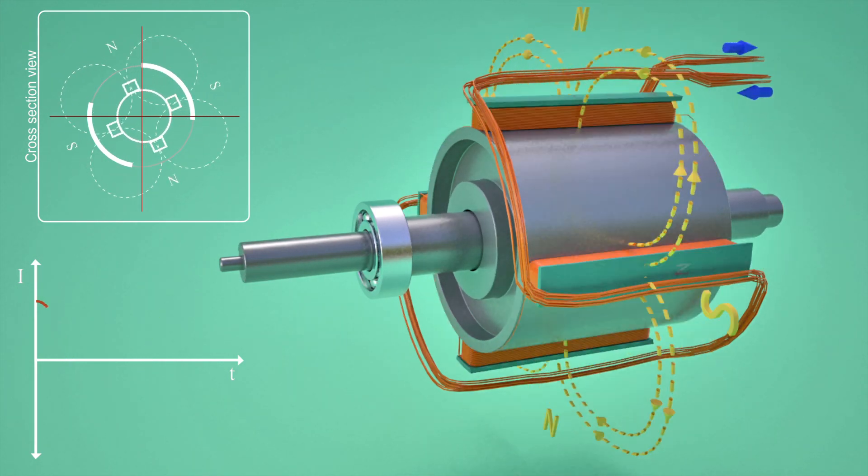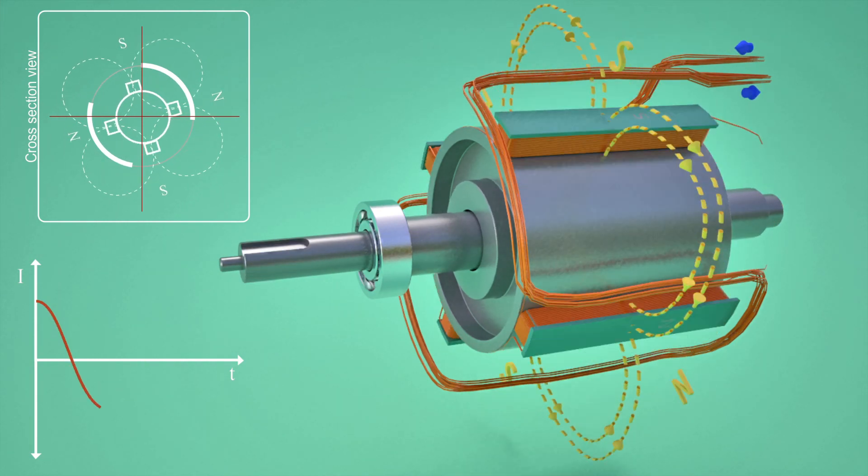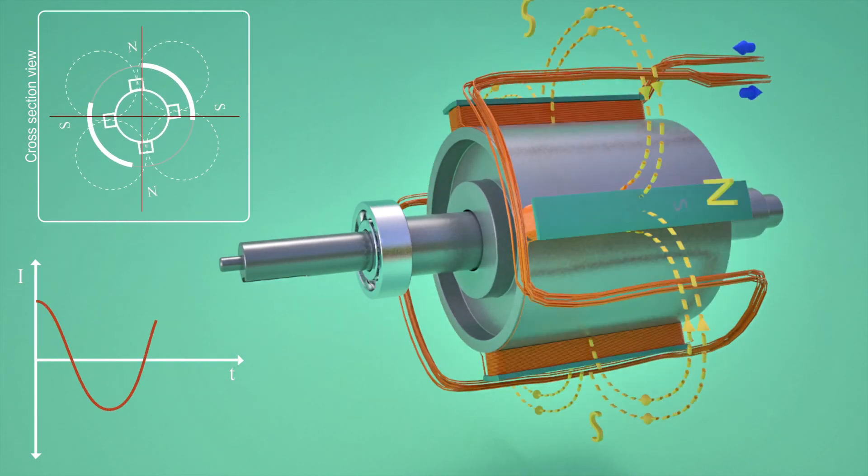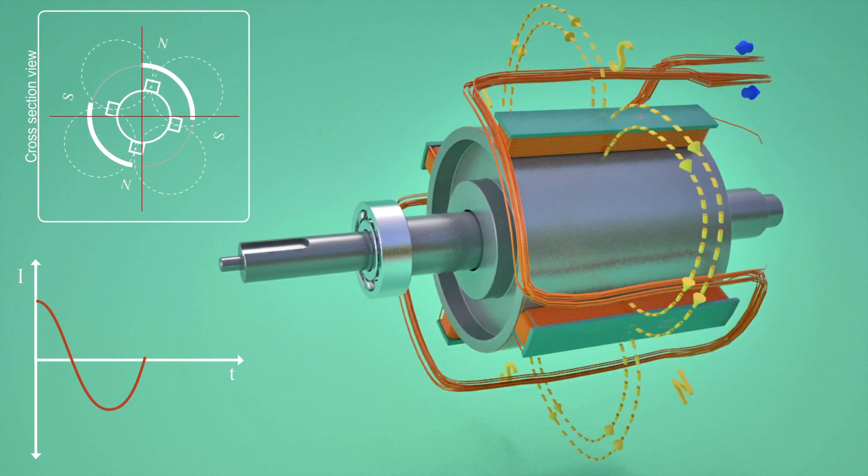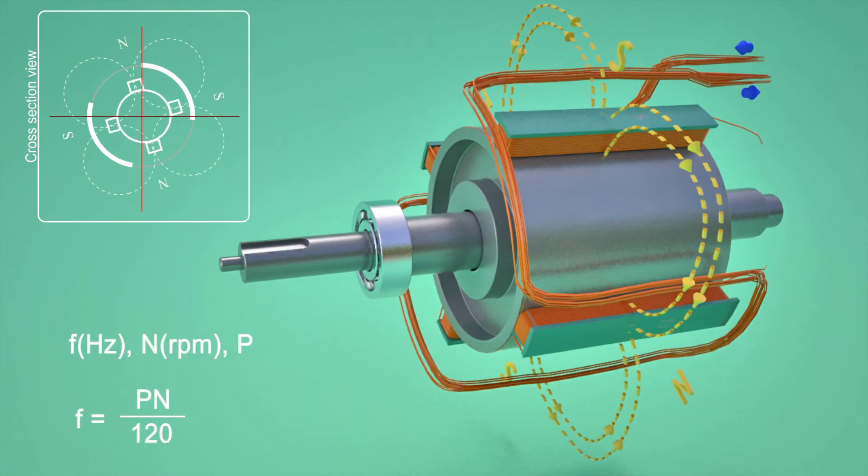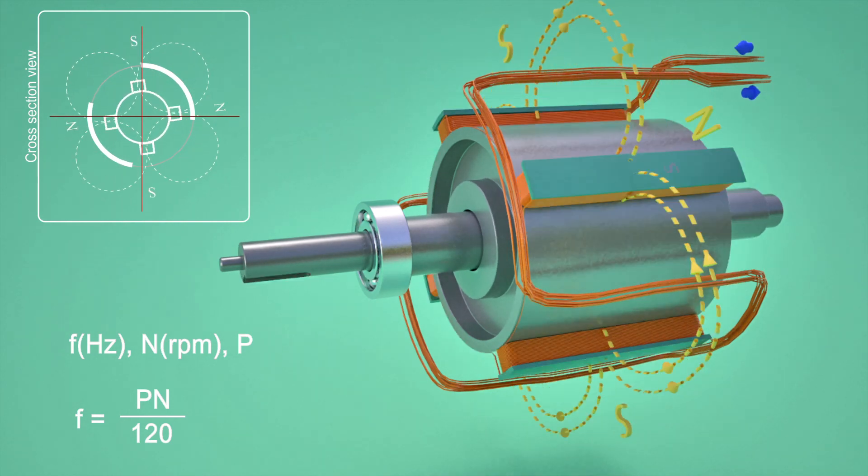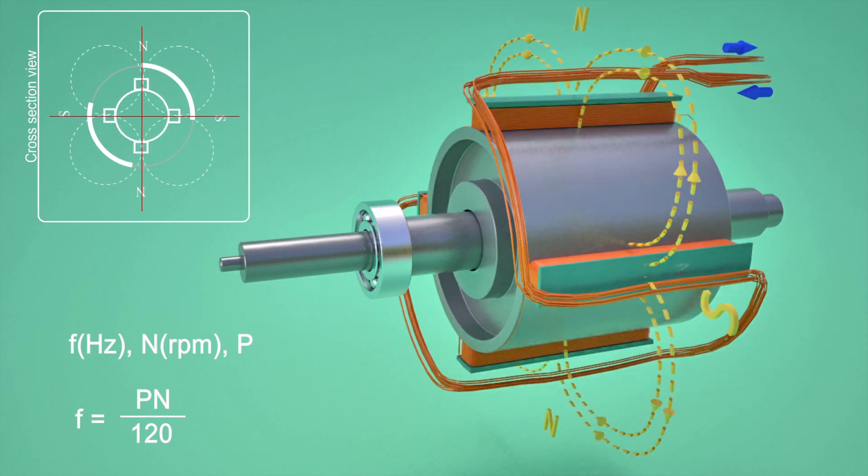It can be easily established that frequency of induced EMF, rotor speed, and number of poles are connected through the following relationship. It is clear from this relationship that frequency of electricity produced is synchronized with mechanical rotational speed.